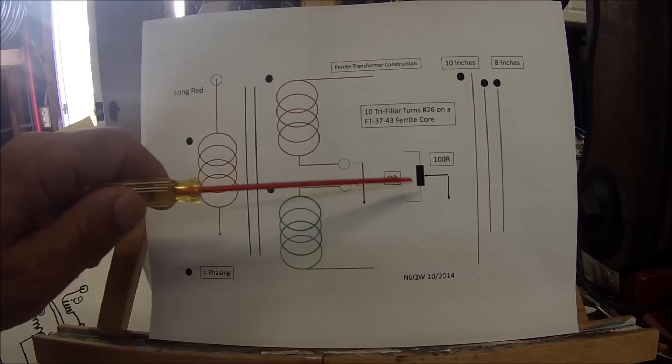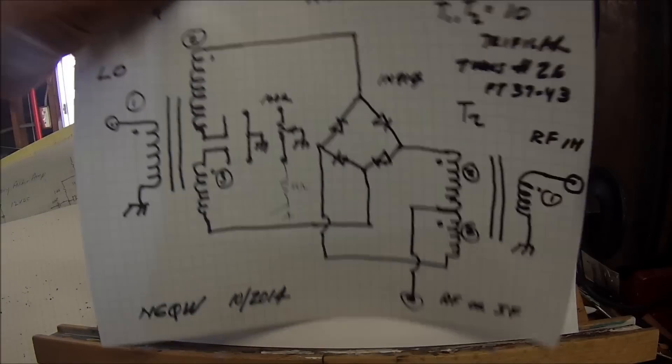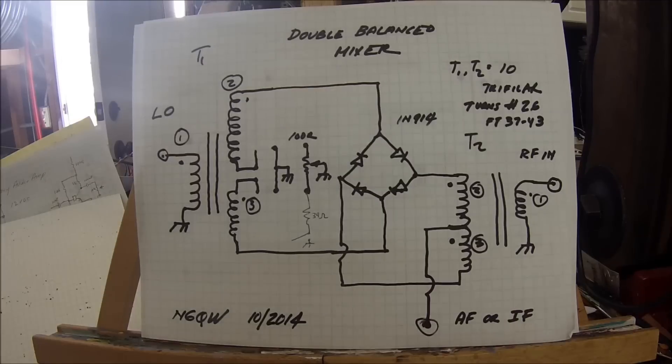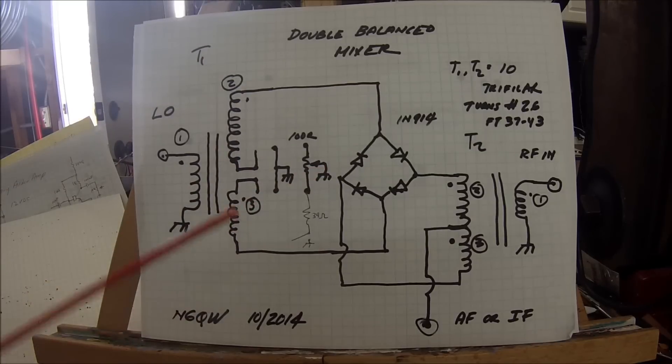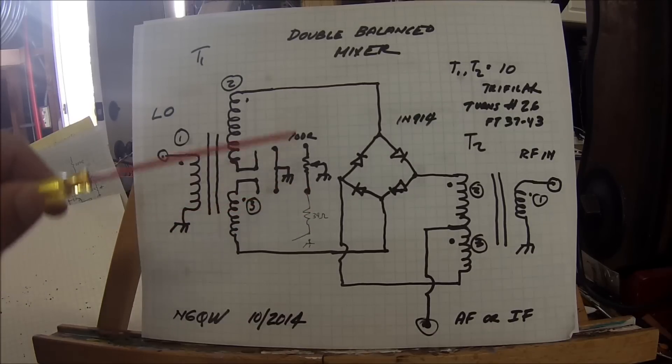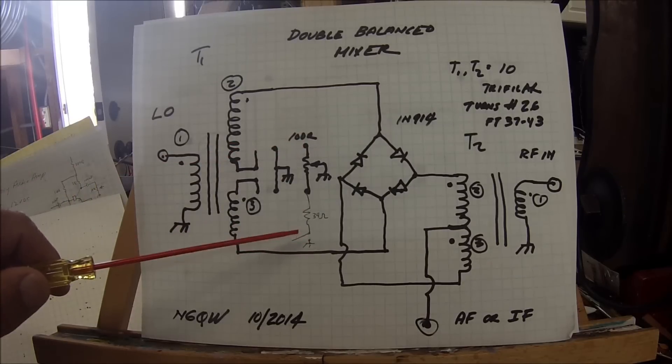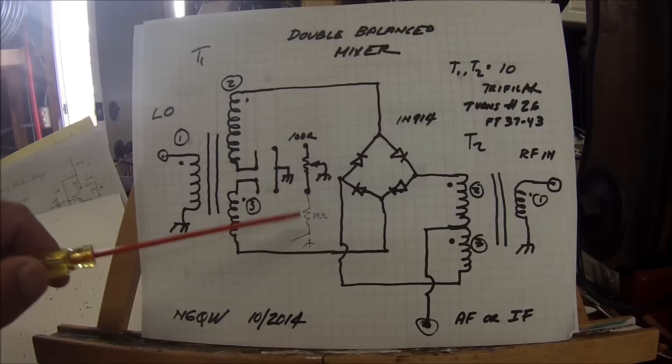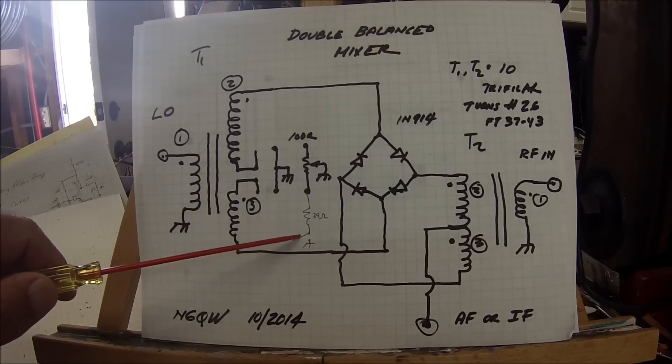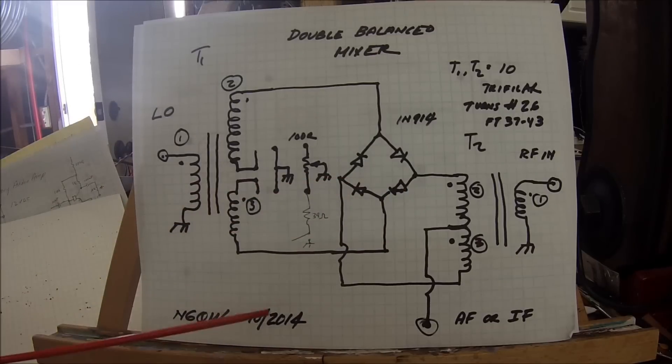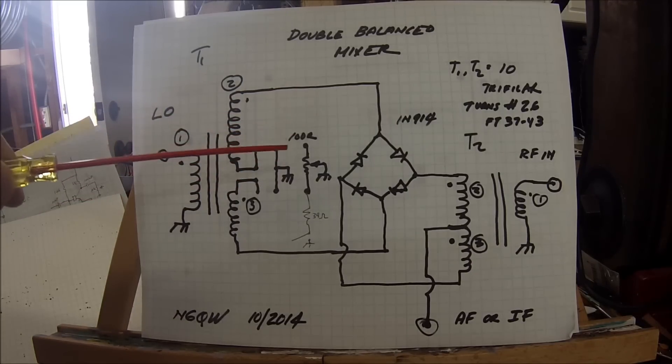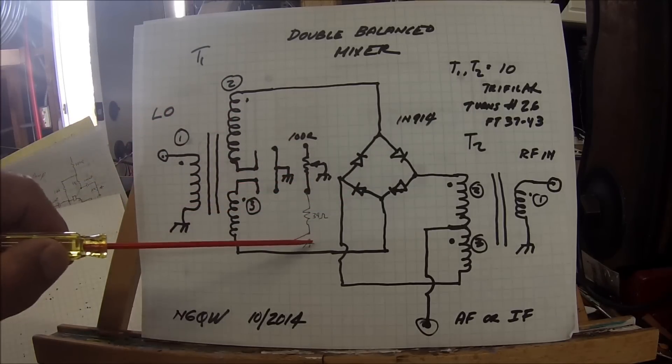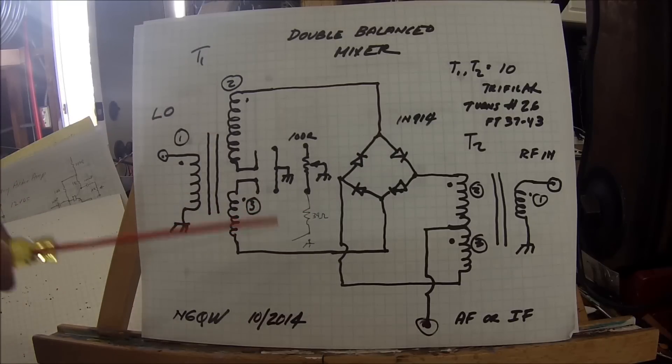This enables you to unbalance the double balanced mixer. By connecting a small 39 ohm resistor to this point and leaving it floating for normal operation, if you close this with a switch or relay closure, it unbalances the mixer. If this is on a balanced modulator, it inserts the carrier. This is really important for tune-up.